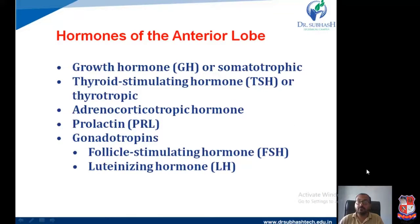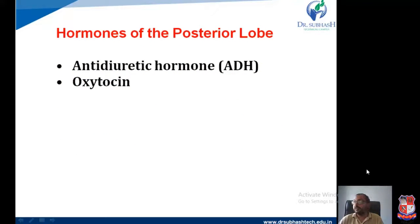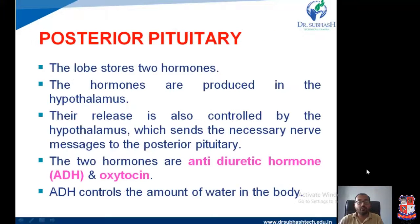The hormones of the anterior lobe are: growth hormone (somatotropic hormone), thyroid-stimulating hormone (thyrotropic hormone), adrenocorticotropic hormone, prolactin, and the gonadotropins — follicle-stimulating hormone and luteinizing hormone. In the case of the posterior lobe: antidiuretic hormone (ADH) and oxytocin. We will first learn about the posterior pituitary gland and its secretions.